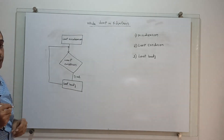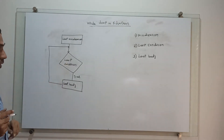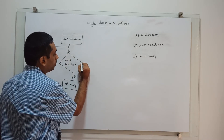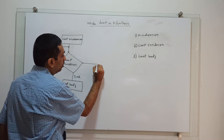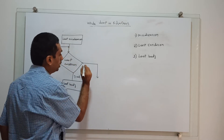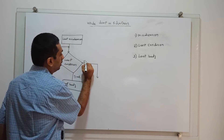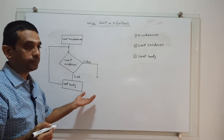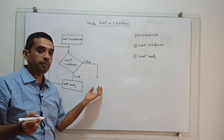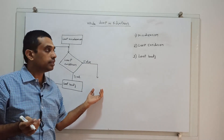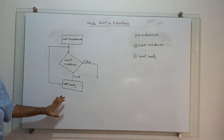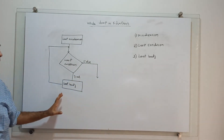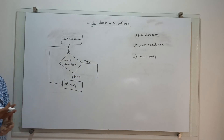This is an iterative process — until the loop condition is true, the loop body keeps executing. Once the condition is false, the control goes out of the loop. It may reach the next statement after the loop, or it may be a stop. This is the way to draw a while loop in a flowchart, and we can apply it for various operations.